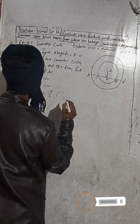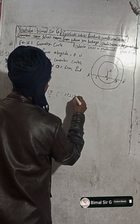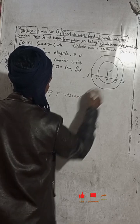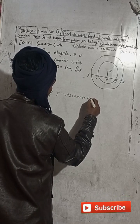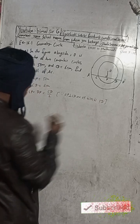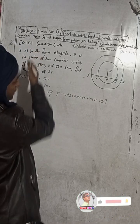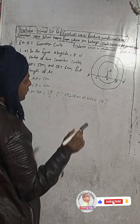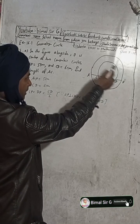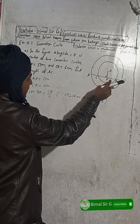The reason for this is: OP is perpendicular to CD, and OP bisects CD. This theorem — that a perpendicular line drawn from the center of a circle to the chord bisects the chord — I have already taught you in question number 3.